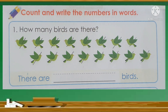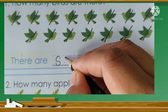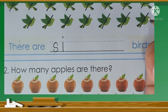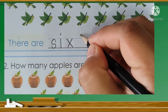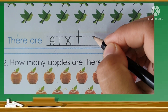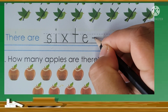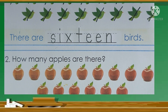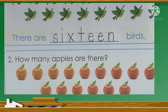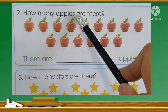Now we will write the word 16. S-I-X-T-E-E-N. There are 16 birds.